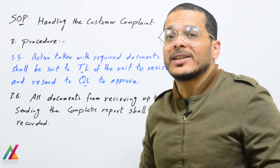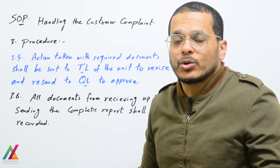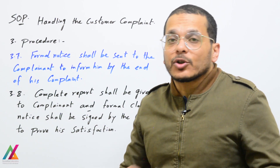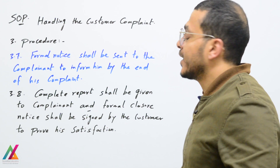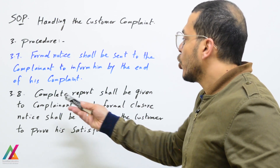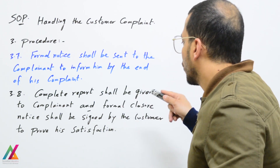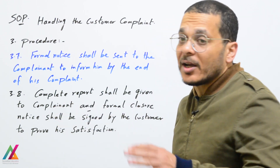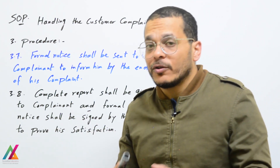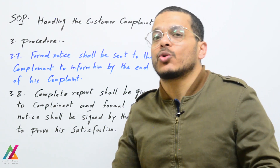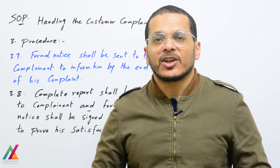All documents from receiving the complaint up to sending the complete report shall be recorded and kept with the quality lead and the responsible person, and shall be available to the customer upon request. After solving the complaint, a formal notice shall be sent to the customer to inform them of the resolution. A complete report shall be given to the customer, and a formal closure notice shall be signed by the customer to confirm their satisfaction. You can also have a specific form for customer satisfaction to record whether they are satisfied or not.